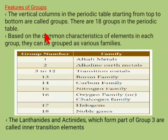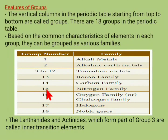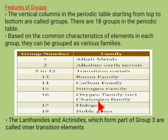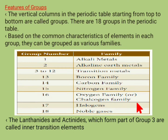There are 18 groups in the periodic table, and the elements in each group can be grouped into various families. The first group is called alkali metals. The second group is called alkaline earth metals. Groups 3 to 12 are called transition metals. The 13th group is called the boron family. The 14th group is the carbon family. The 15th group is the nitrogen family. The 16th group is the oxygen family or chalcogen family. The 17th group is called halogens, and the 18th group is called noble gases or rare gases or inert gases. Noble gases have stable electronic configuration.